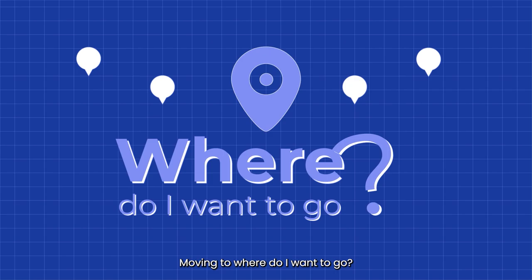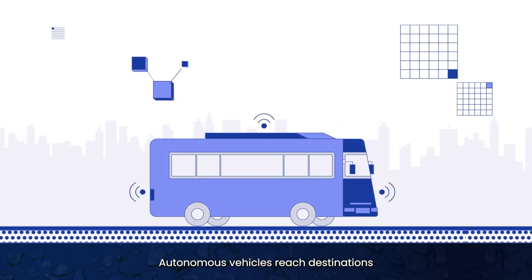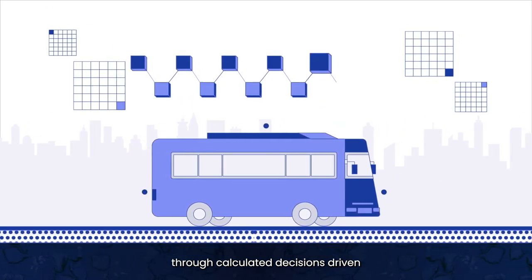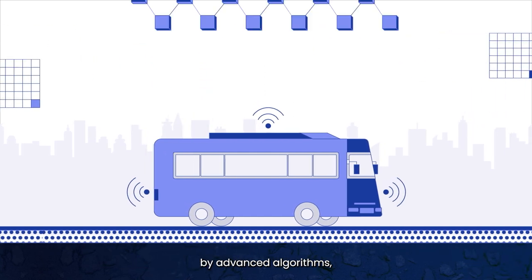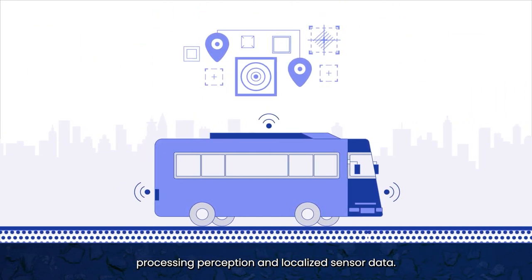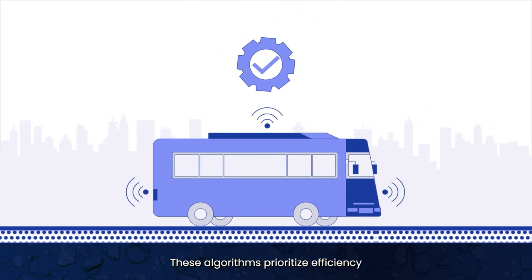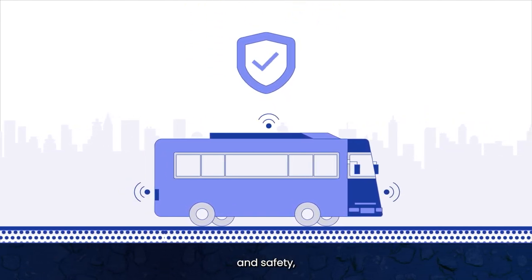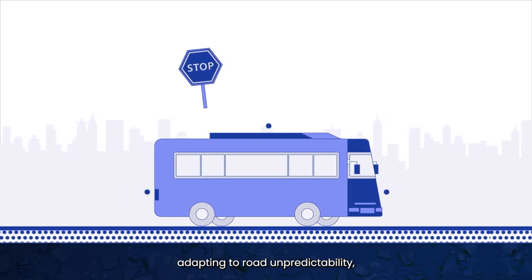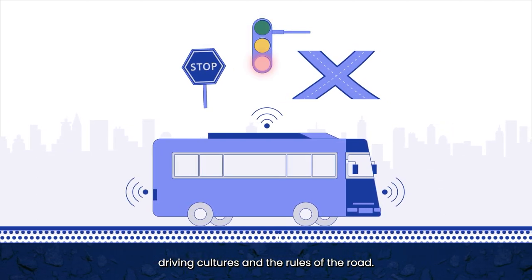Where do I want to go? Autonomous vehicles reach destinations through calculated decisions driven by advanced algorithms processing perception and localization sensor data. These algorithms prioritize efficiency and safety, adapting to road unpredictability, driving cultures, and the rules of the road.